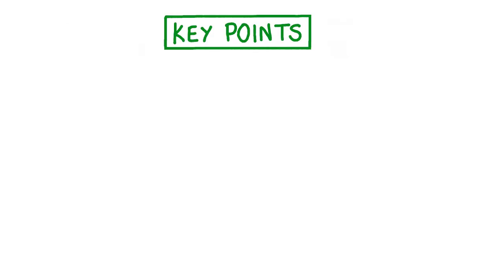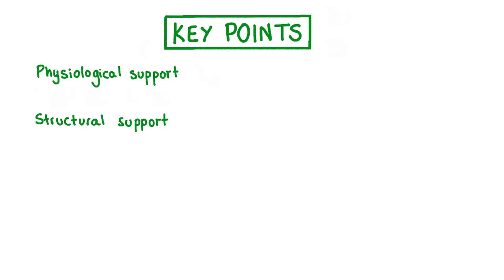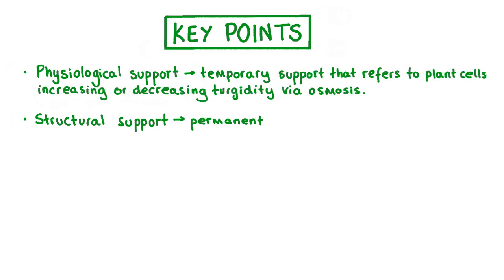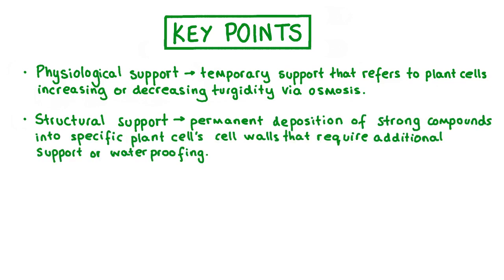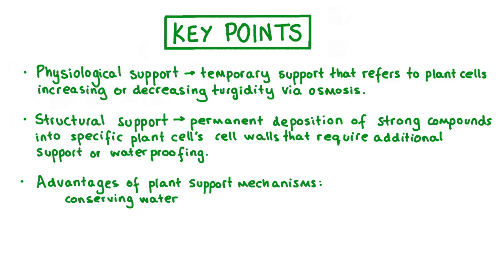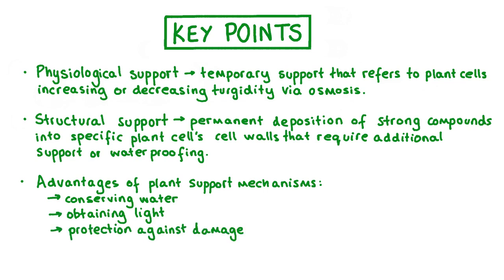Let's recap the key points covered in this video about support in plants. Support in plants can be divided into physiological support or structural support. Physiological support is temporary, while structural support is usually permanent. Physiological support refers to plant cells' ability to increase their turgidity via osmosis. Structural support is the deposition of strong compounds like lignin into specific plant cell walls that need extra support or waterproofing. Plant support mechanisms are advantageous as they help a plant to conserve water, access more sunlight, and protect against damage and disease-causing pathogens.